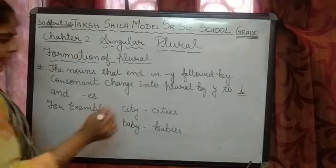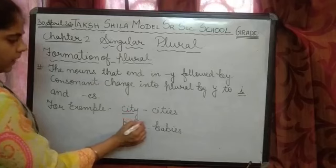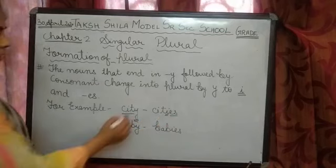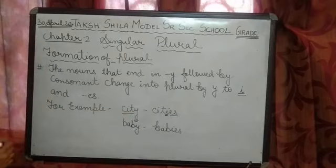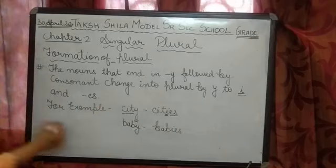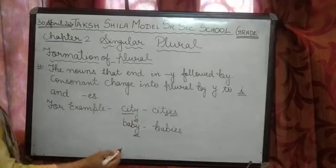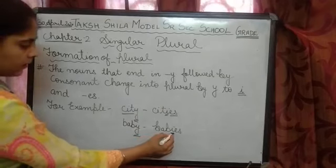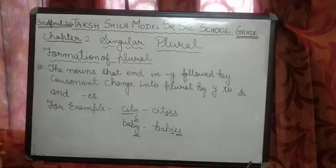Here, city is a noun and we have removed the Y and added I and ES. So in place of Y, we have added IES. Another example: baby — Y will change into I and we add ES. This is the other rule for changing singular into plural.